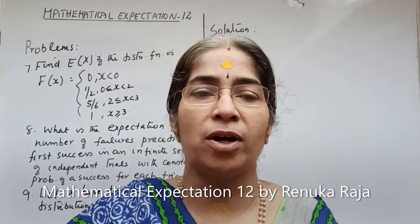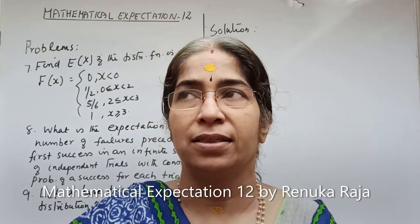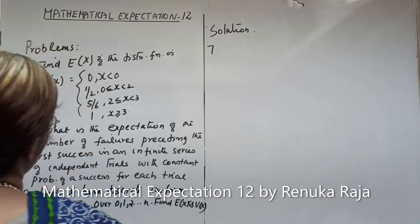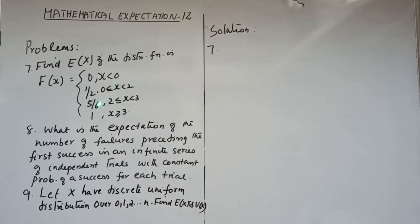We are doing some more problems on mathematical expectation in the discrete case. The problem is: we are given capital F of X, which is the distribution function, equal to 0 for X less than 0; 1/2 for 0 ≤ X < 2; 5/6 for 2 ≤ X < 3; and 1 for X ≥ 3. We have to obtain the expectation of X.